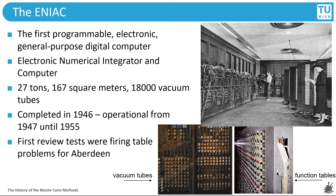It was about a thousand times faster than the electromechanical machines used at the time, weighed 27 tons and occupied 167 square meters. The machine was finished by 1946, when the first review tests were conducted. It was then operational from 1947 until 1955. Programming was done using various switches and it took a long time to change the current program. Even during the construction, Mauchly, Eckert, and the other scientists involved already thought of improvements necessary for ENIAC and possible future computers, such as the idea of stored programs. Apparently though, they did not get much credit for the concepts later, since their names were removed from the first draft paper that described the ideas. This first draft later became what we know as von Neumann architecture.